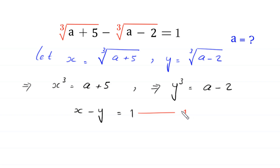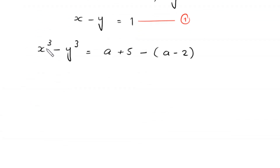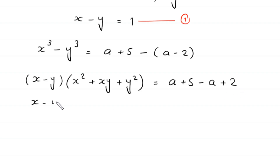Let's call this equation 1. We subtract the second equation from the first, so x³ - y³ = (a+5) - (a-2). Now x³ - y³ factors as (x - y)(x² + xy + y²), which equals a+5 minus a minus 2. The negative times negative 2 becomes positive 2.